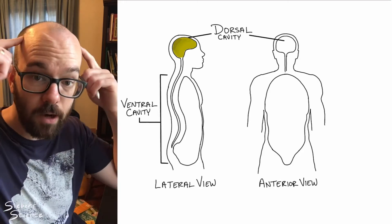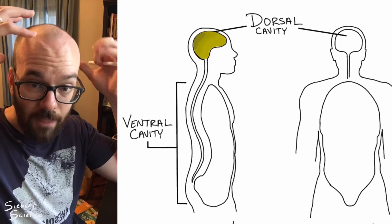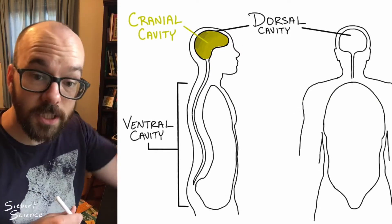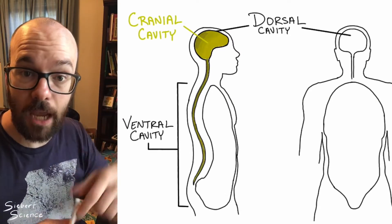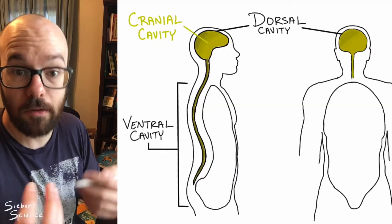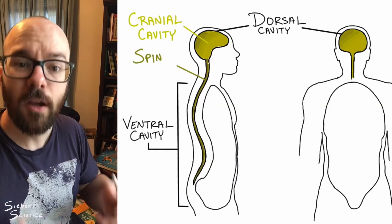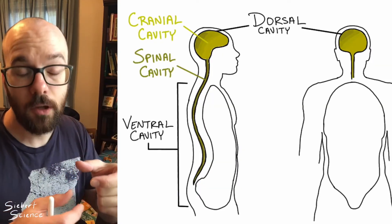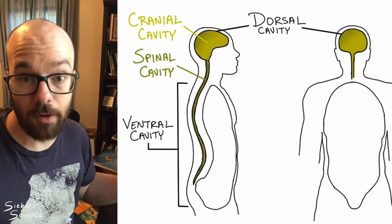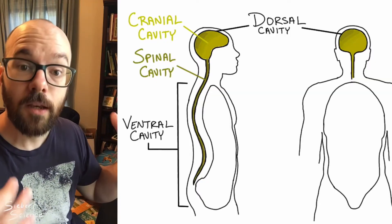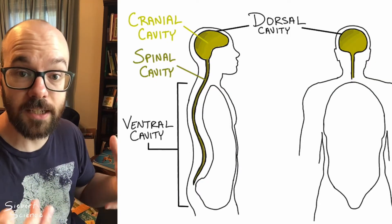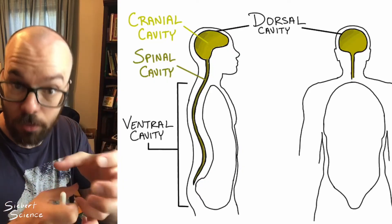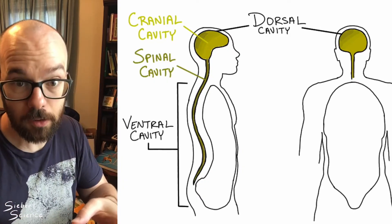The first sub-cavity we'll look at is the cranial cavity, contained within the skull, and it contains just your brain. Just inferior to that, we have the spinal cavity, which contains your spinal cord — the nerve tissue that conducts signals from your brain down to the rest of your body. That cavity is contained by the vertebrae in your spine, the bones which protect the spinal cord.